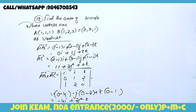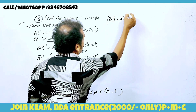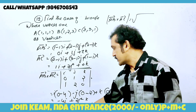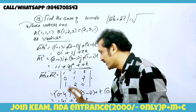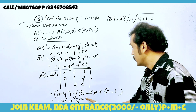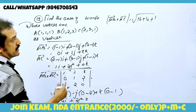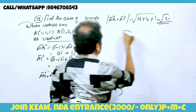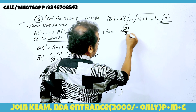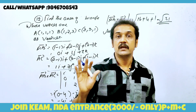Now we find the modulus of AB cross AC. The magnitude is √((-4)² + 2² + (-1)²) = √(16 + 4 + 1) = √21. Therefore the area of the triangle is ½|AB × AC| = √21/2. Find the area of the triangle whose vertices are A, B, C — the answer is √21/2.